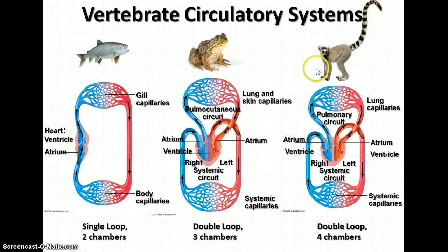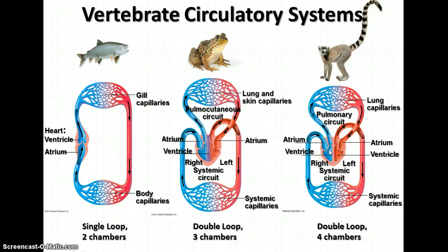In birds and mammals, there is a four-chambered double loop system where oxygen-rich and oxygen-poor blood are completely separated. Note how the heart is labeled in diagrams: you are looking at it as if it is in the chest of the organism, so what appears on your left as you view the diagram is actually the right side of the heart.